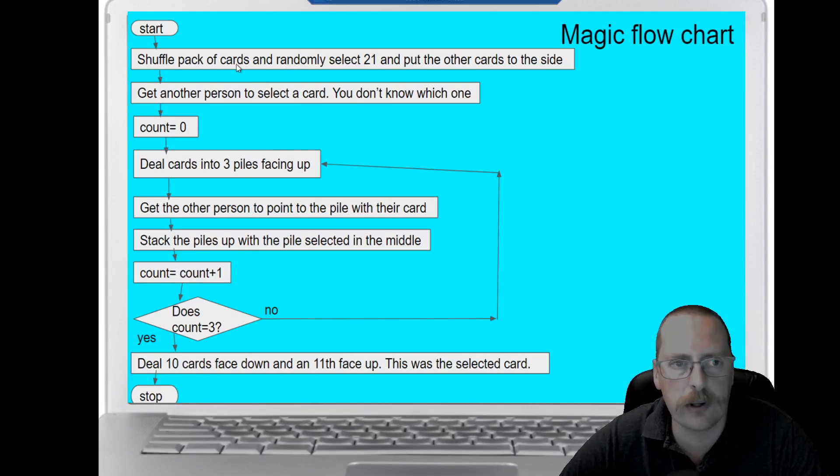We shuffle the cards and we ask the person to choose one of the 21 cards, keep it to themselves, and we set count at zero. So this is initializing a variable count which can change, and at the start it's set to zero. We're going to deal the cards into three piles facing up, and get the person to point to the pile with their card in it.